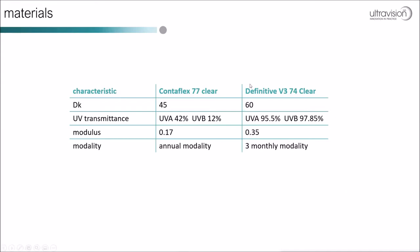Why would you fit Definitive rather than Contraflex? Definitive has a higher oxygen transmissibility (Dk), is far less prone to depositing, and is very comfortable to wear. Although the two materials appear to have quite different moduli, they actually behave the same because other physical characteristics make them equivalent when fitting. Powered lenses are available in both materials: up to one year in hydrogel or three-monthly in Definitive, but the fitting set is only in Contraflex 77.